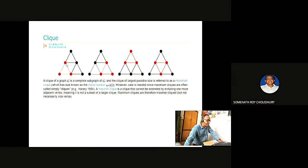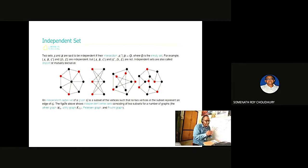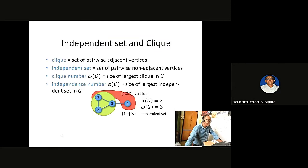A complete graph is where all nodes are connected to each other. A clique is a subset where all nodes are connected. An independent set means nodes in the graph that are not connected to each other. For example, nodes 1-2-3 form a clique and nodes 1 and 4 are an independent set.